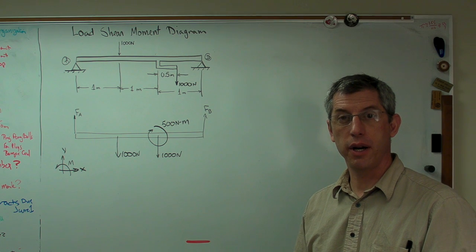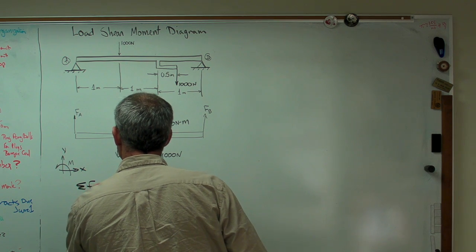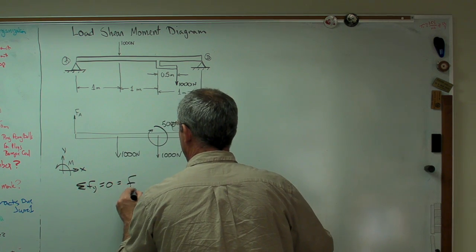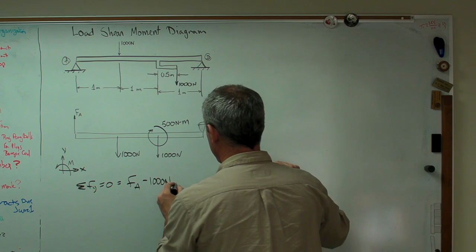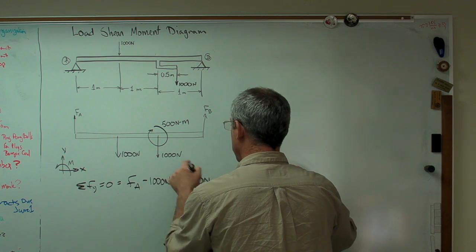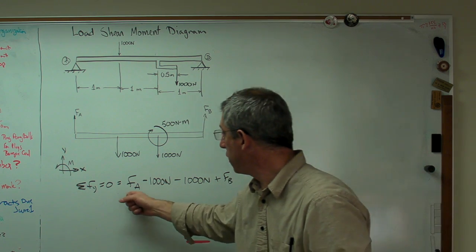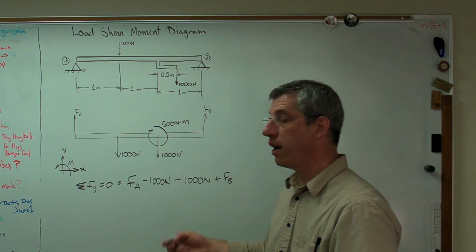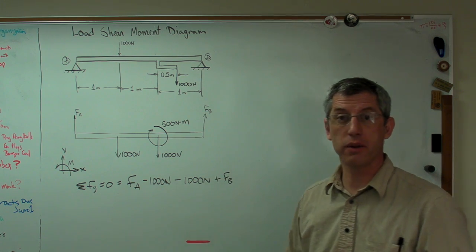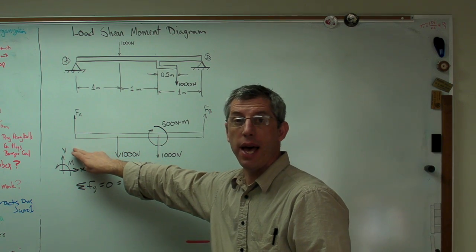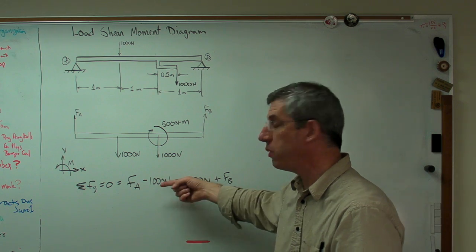We can't draw the load shear moment diagram until we're sure of that. So if I write the sum of the forces in the y direction equals 0, I'm going to get FA minus 1,000 newtons there, and I'm just working from left to right, minus another 1,000 newtons there, plus FB equals 0. Well, I've got two things I don't know. I don't know what FA is, and I don't know what FB is, and I've only got one equation. So clearly, I need one more equation.